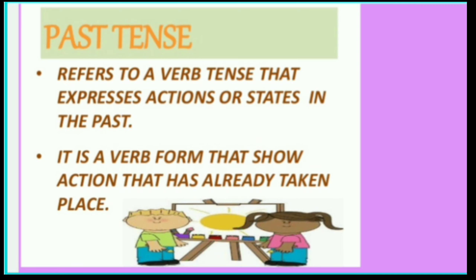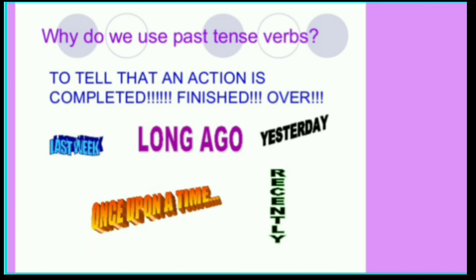Past tense refers to a verb tense that expresses actions or states in the past. It is a verb form that shows an action that has already taken place. We use past tense verbs to tell that an action is completed, finished, or over.